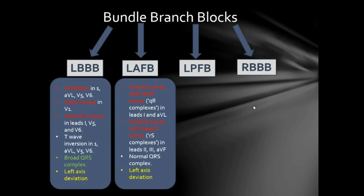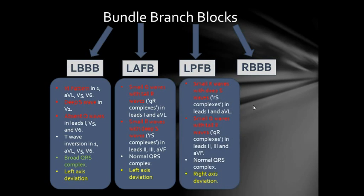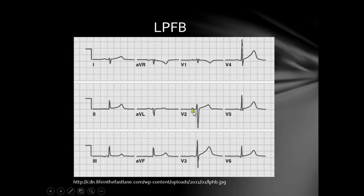The third type is the Left Posterior Fascicular Block, characterized by pretty much the opposite findings of the left anterior fascicular block: small R-waves and deep S-waves in leads 1 and AVL; small Q-waves and tall R-waves in leads 2, 3, and AVF; a normal QRS complex; and right-axis deviation. On the typical ECG, you can confirm these findings — lead 1 is facing downwards, whereas leads 2, 3, and AVF are facing upwards.